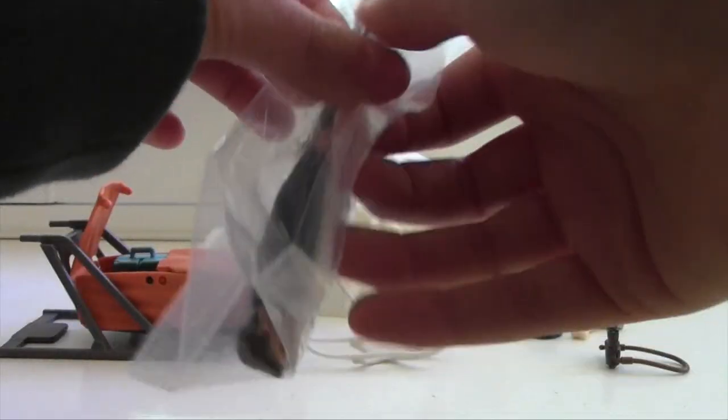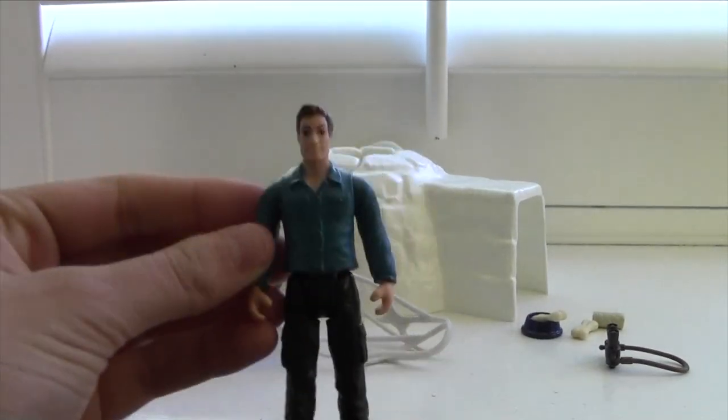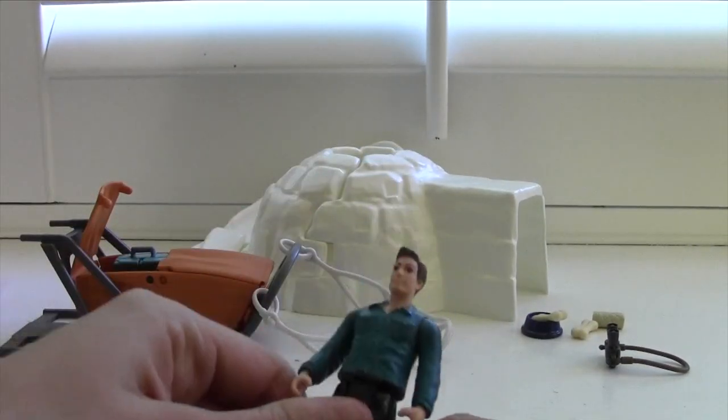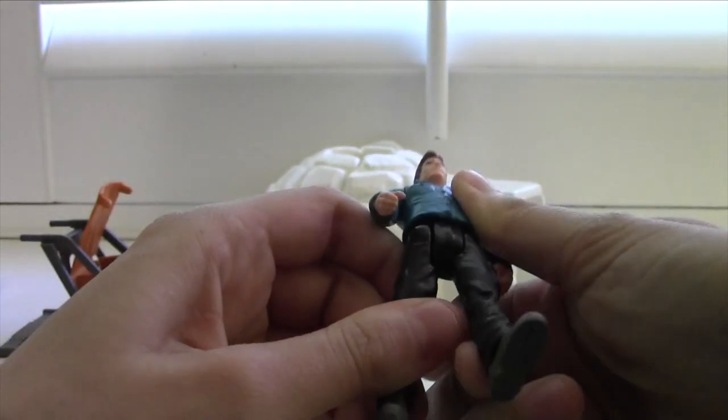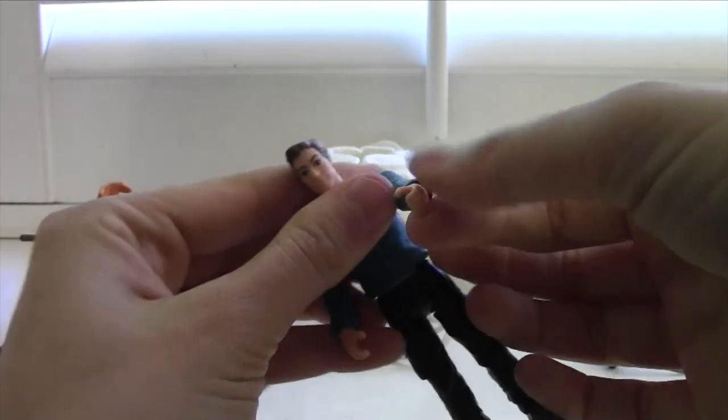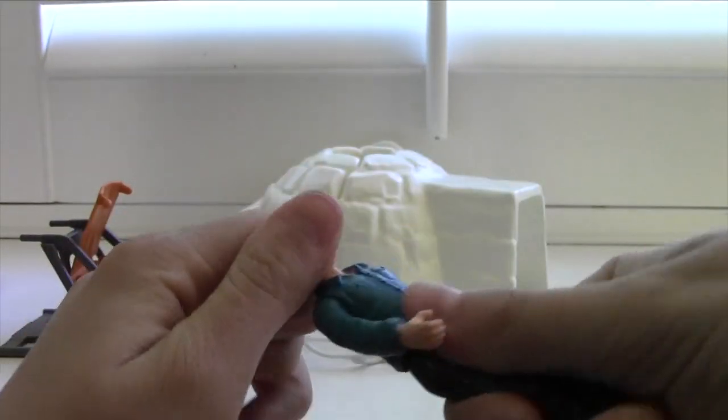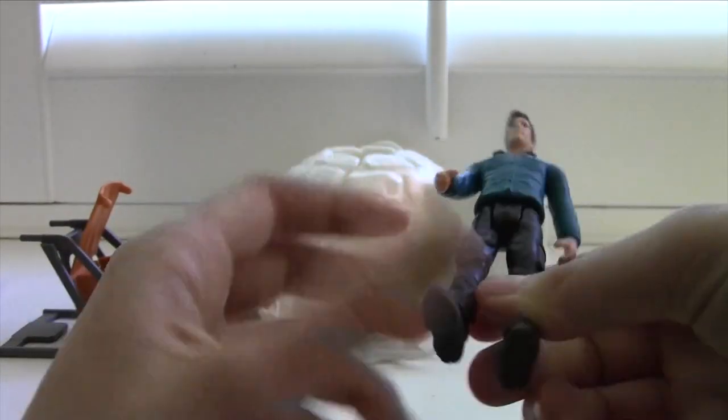Right off the bat we see we have this adorable little man. It looks like his legs are supposed to swing but they're very stiff. His waist bends and so do his arms quite well. His head does not bend. The legs are really sticking though, I'm not quite sure why.